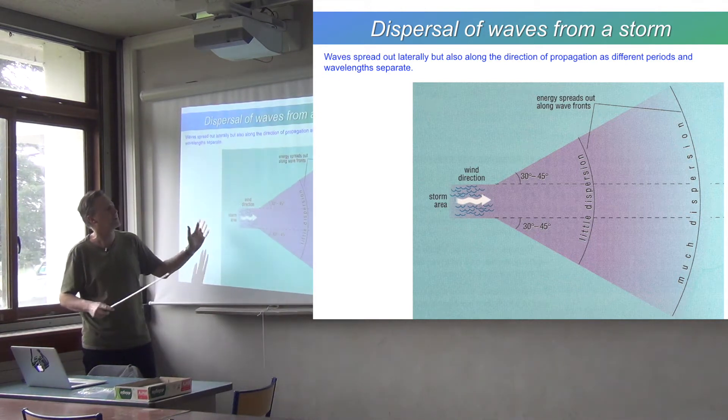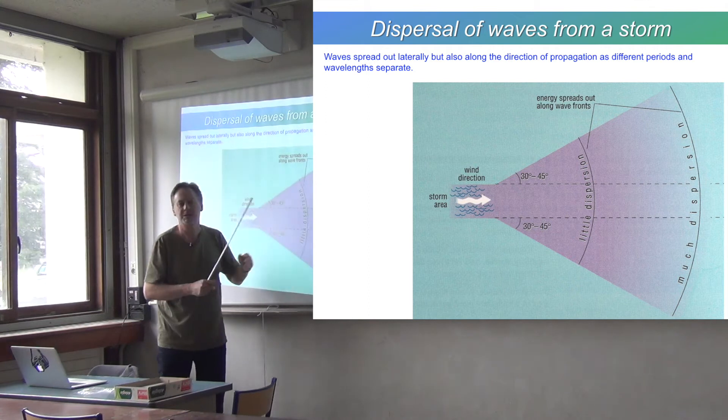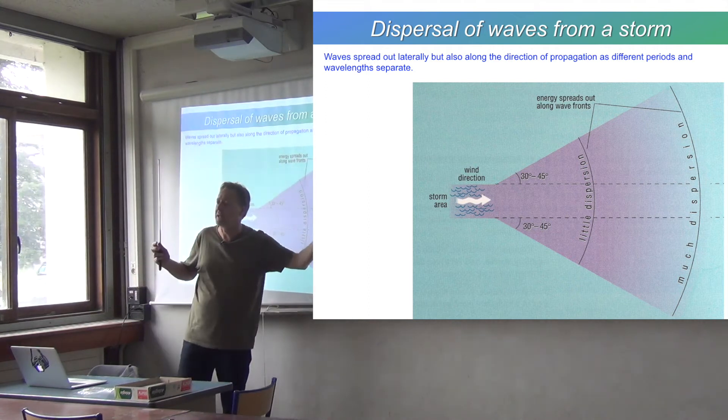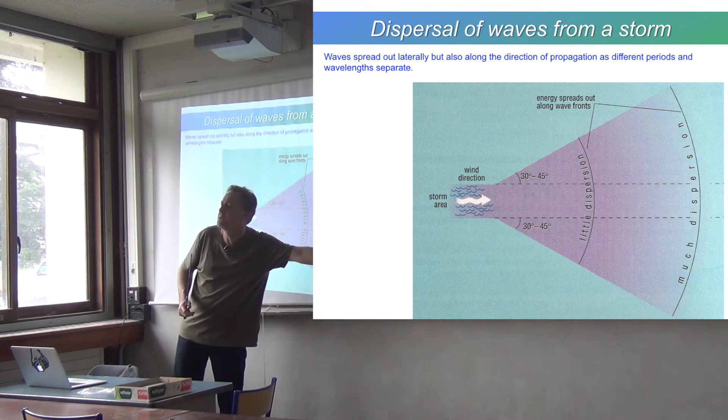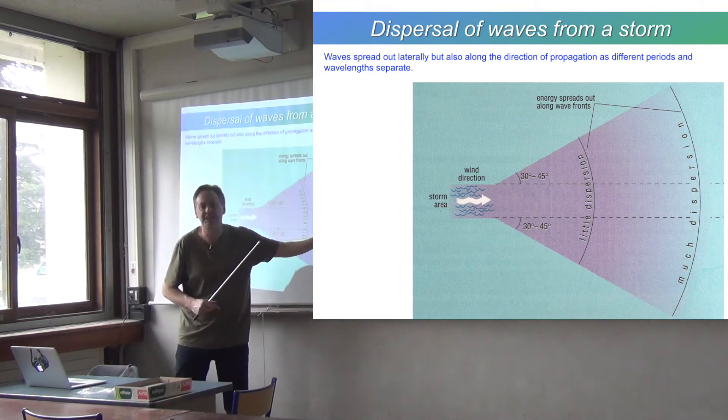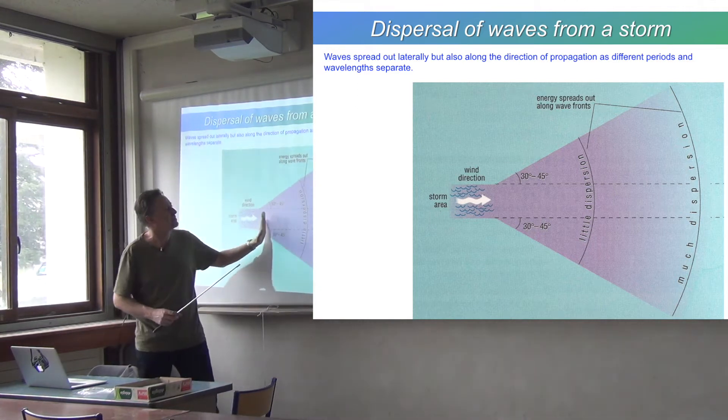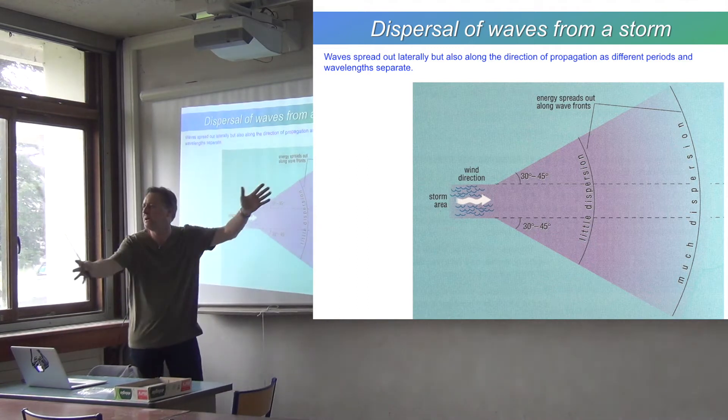So we have two effects there. We have an effect whereby we have this separation of wavelengths. As the waves propagate away from the perturbation, the energy density of the wave will diminish as the wave propagates away because it propagates out laterally as well.